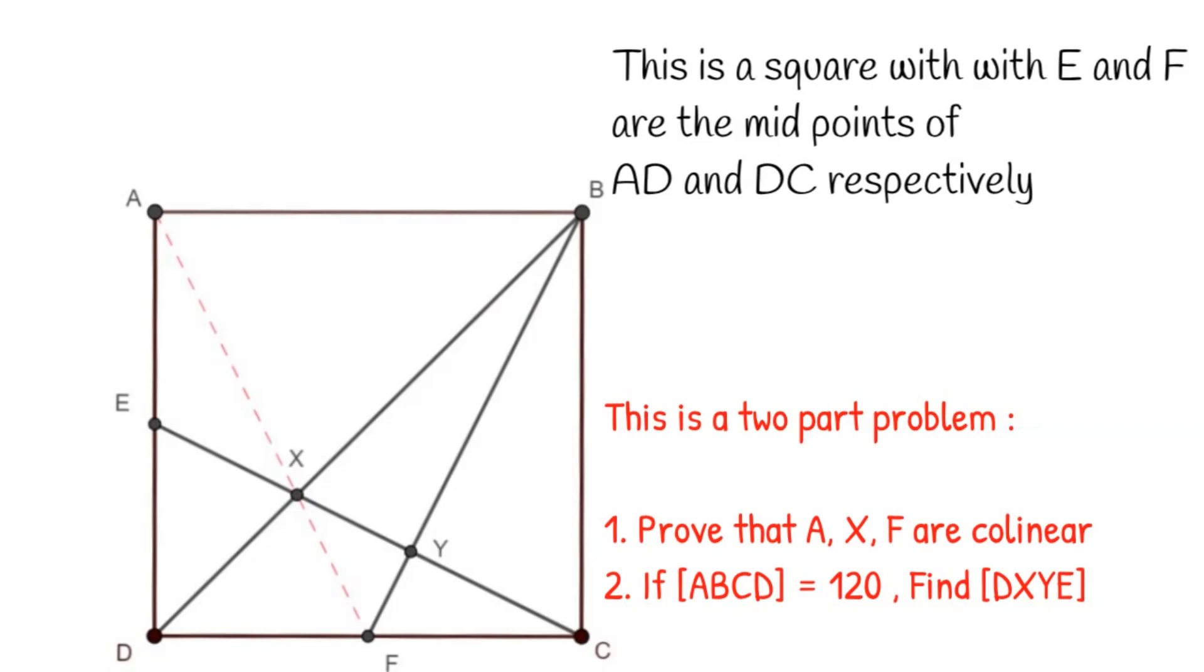This is a two-part problem. In the first part, we have to prove that A, X, and F are collinear points. The second part of this problem is the area of the square ABCD is given as 120. We need to find the area of the quadrilateral DXYE.